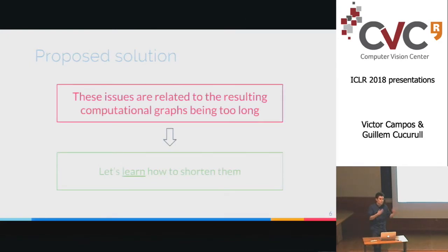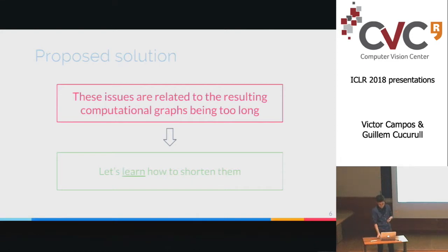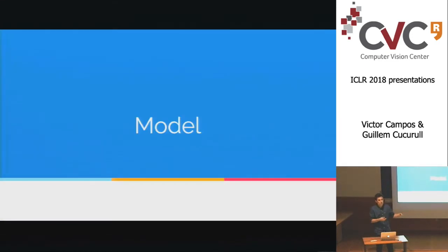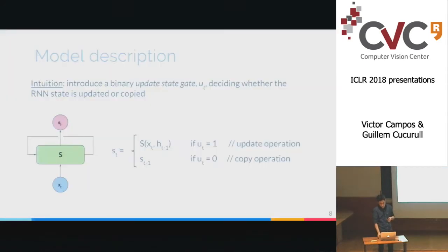Let's assume we cannot change the sequential nature of RNNs, but let's try to address the length of the graph. What we propose is learning how to shorten these sequential graphs in order to alleviate the issues mentioned. We propose a new model — a variation applicable to any RNN. You take whatever RNN you like — vanilla RNN, LSTM, whatever — and apply this modification so that it's able to skip some updates, some input samples.